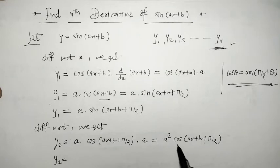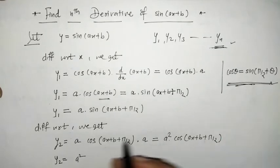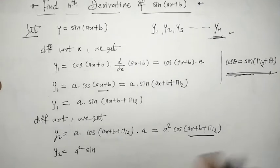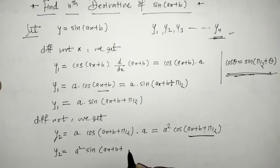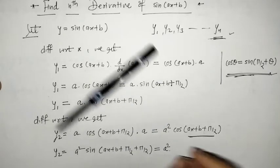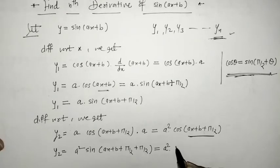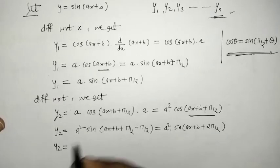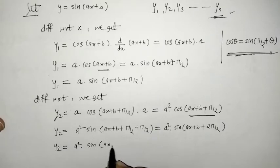We again write this cosine in terms of sine using the same identity, treating (ax + b + π/2) as θ. So we get a²·sin(ax + b + π/2 + π/2), which gives y2 = a²·sin(ax + b + 2π/2).